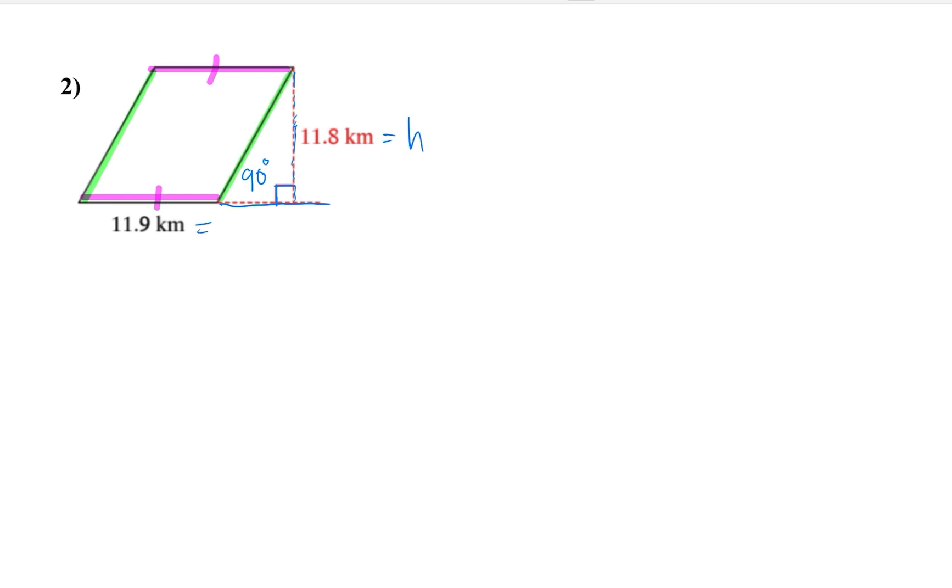And this will also be the base. So similar to the formula with a triangle, but except we're not going to divide it by two. So area of a parallelogram is equal to base times height. Let's substitute: we have 11.9 times 11.8. Multiplying these two numbers, that should give us around 140.42 kilometer square. So this is the area of this parallelogram.